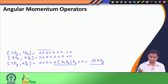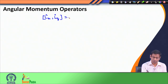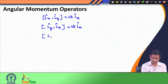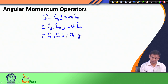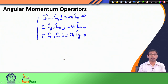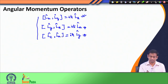In the same way, one can show that [Ly, Lz] = iℏ·Lx and [Lz, Lx] = iℏ·Ly. I would encourage you to derive these two relations yourself as practice. What we see is that the three components Lx, Ly, Lz of the angular momentum operator do not commute with each other, but they follow a cyclic commutation relation among themselves.